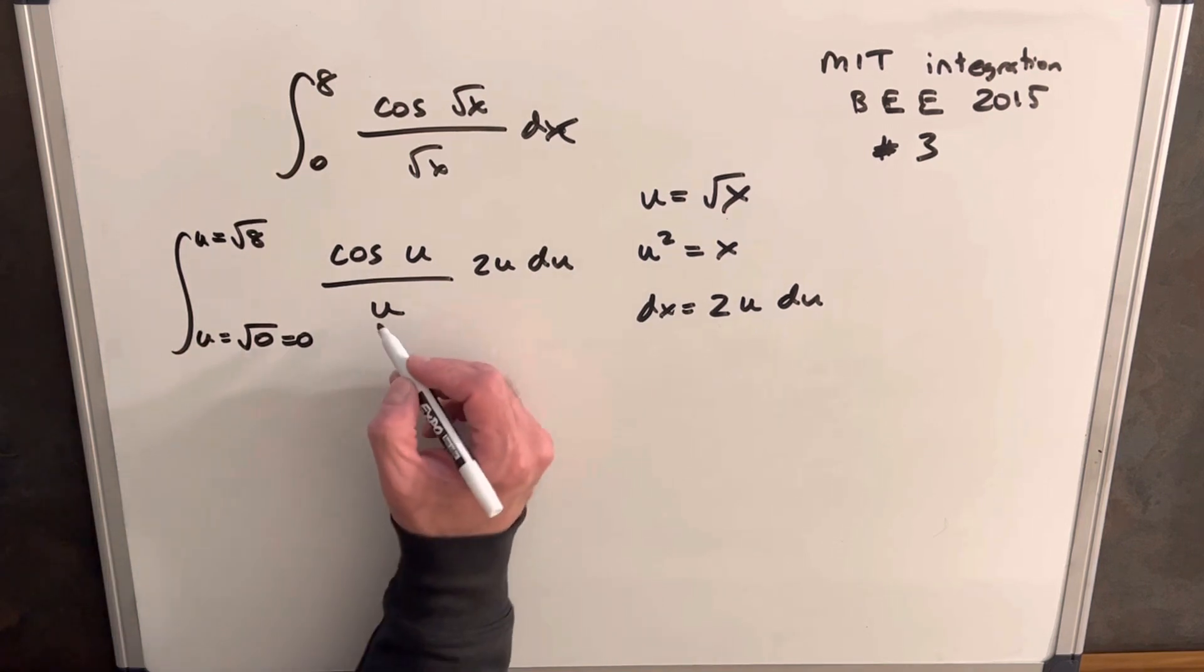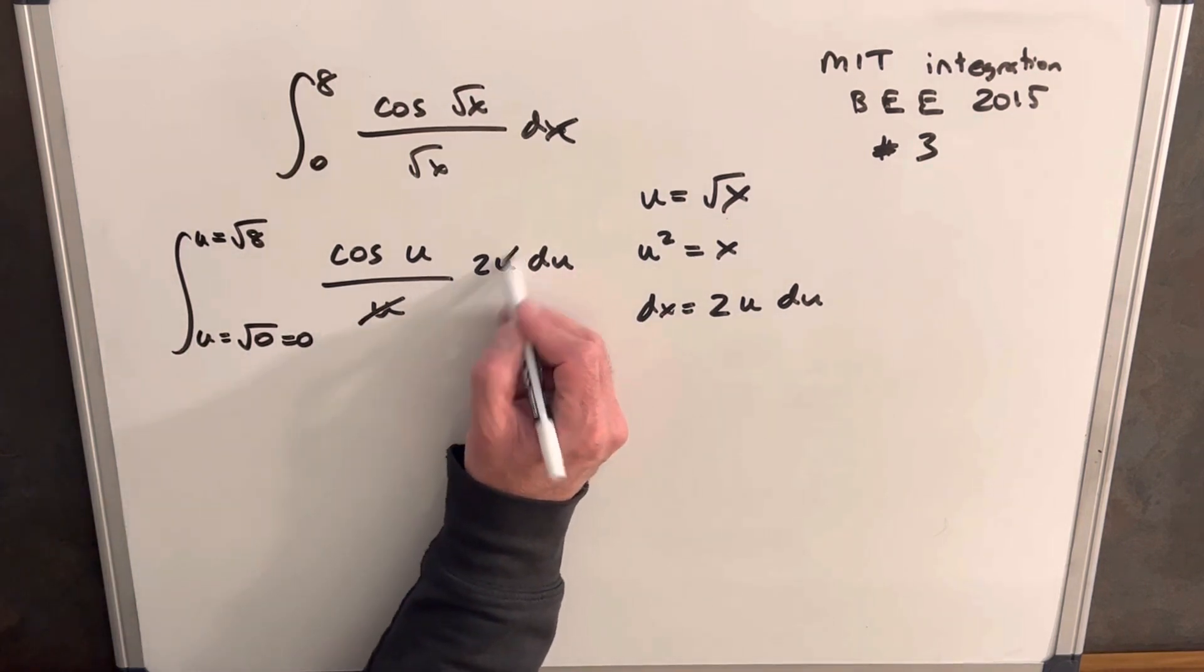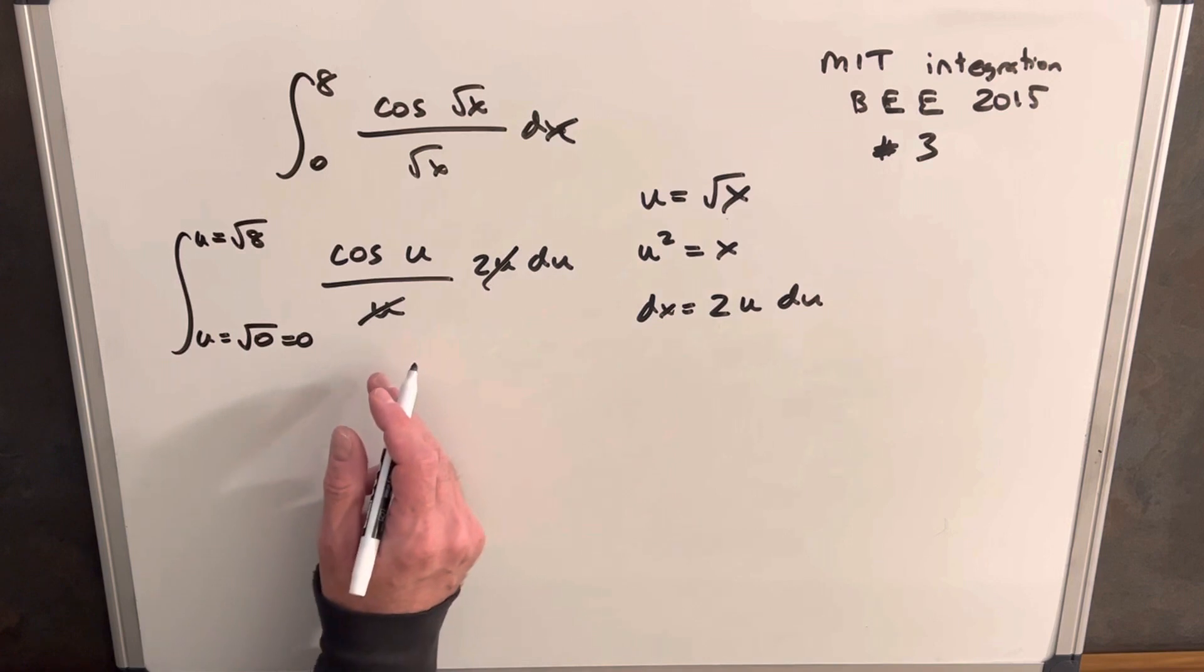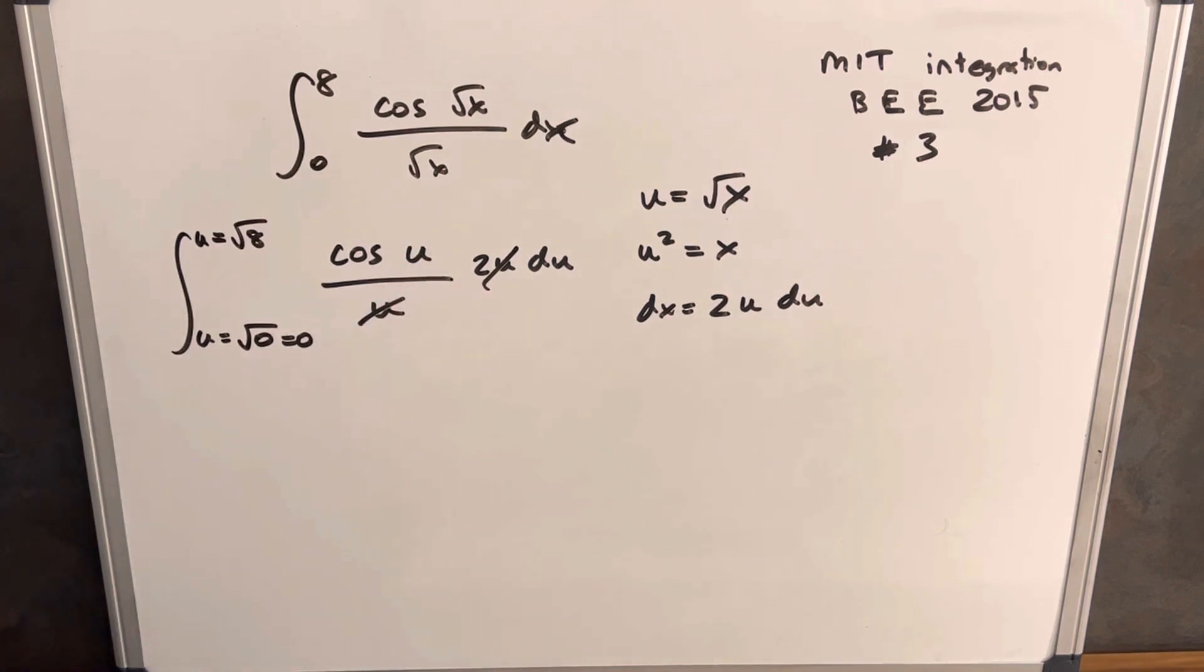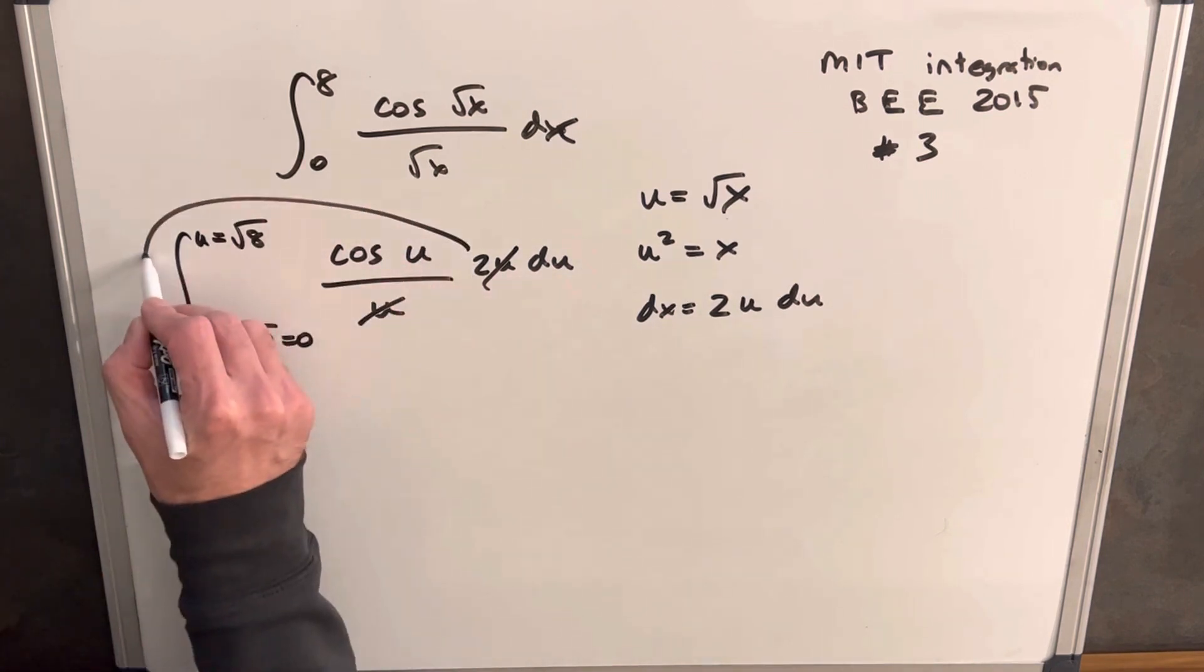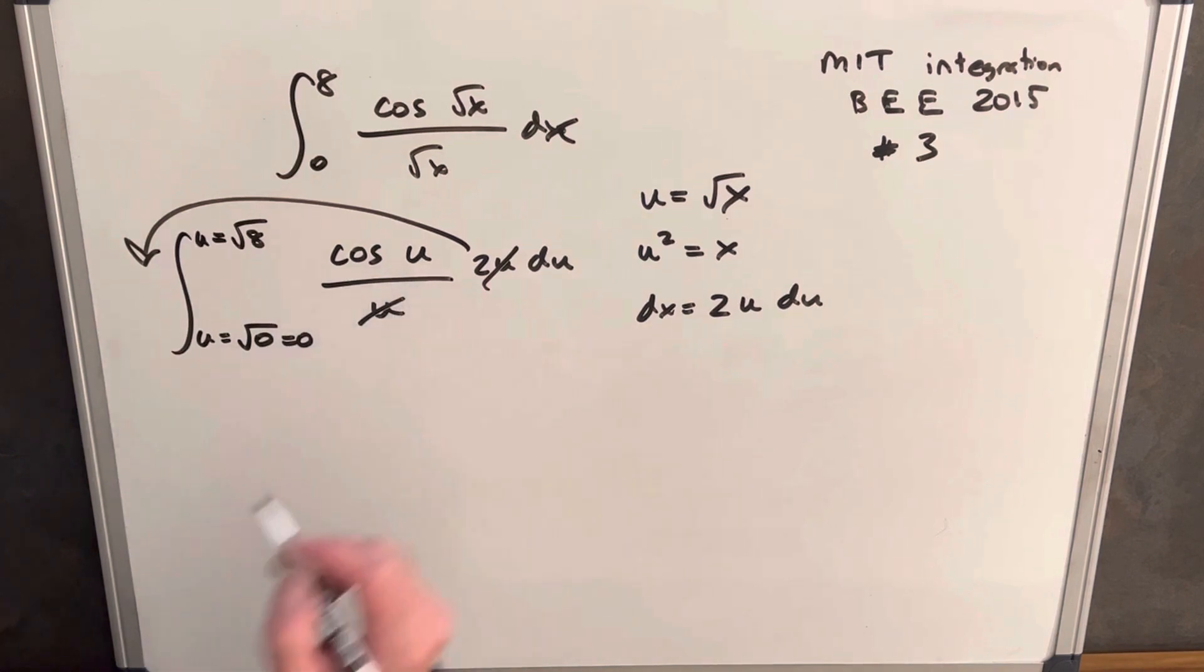But this is some really nice cancellation because it's going to make the integral much easier. Now we don't have to deal with a denominator at all. We'll pull the 2 out front, and then we can just integrate cosine of u, which we know.